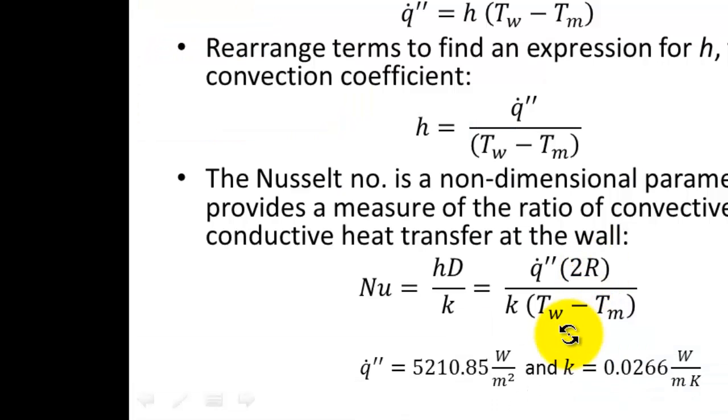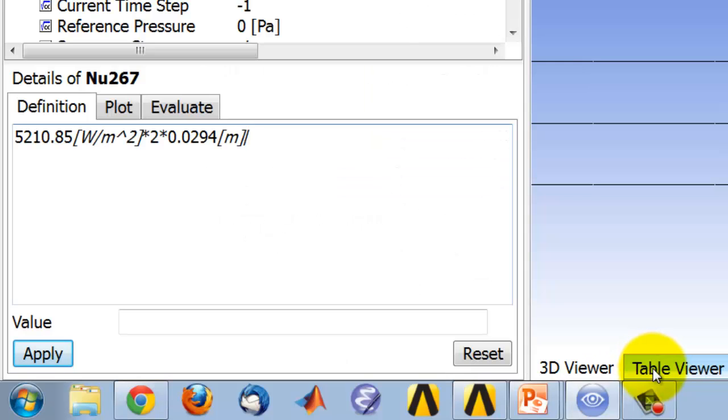And then I have in the denominator K equal to this value here, 0.0266 watts per meter per Kelvin.